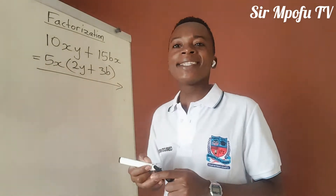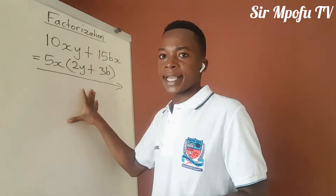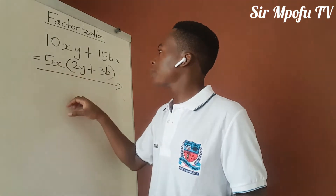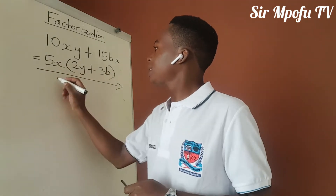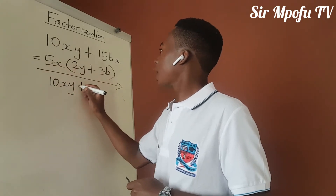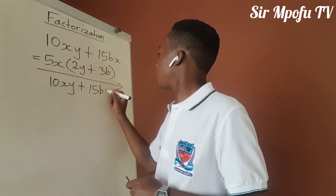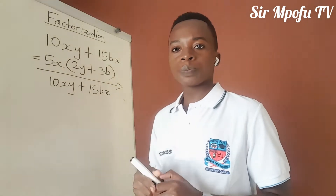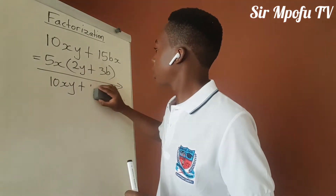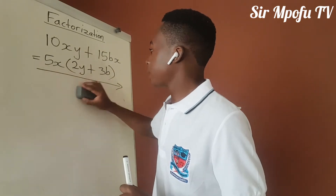Remember, there is no mathematical solution that cannot be proved. If you want to prove this, you just expand. You'll see that your answer will be this one. 5x times 2y, that will be 10xy. And 5x times 3b, that will be 15bx. It's one and the same thing. So this is how you prove factorization — you just expand what you factorized.